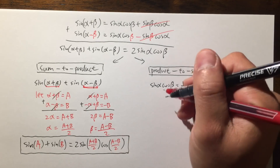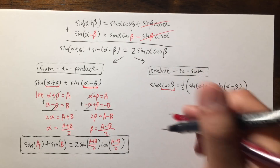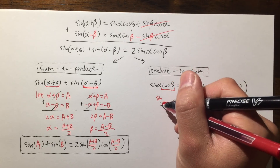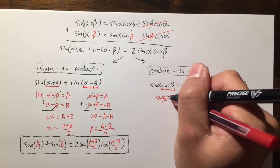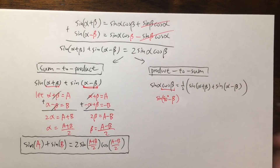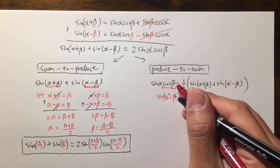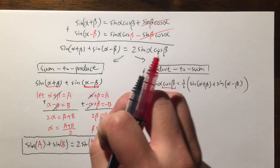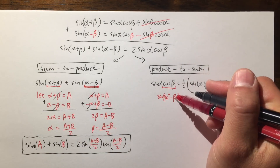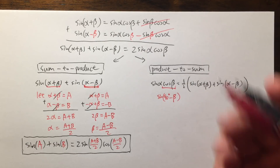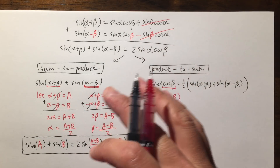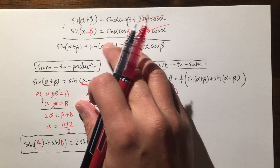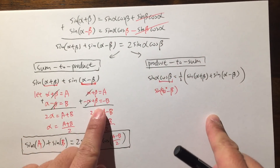I can also show you the co-function identity. I see cosine beta, which we don't want — I want to have this in terms of sine. Cosine beta is the same as sine of 90 degrees minus beta. Why? Because 'co' means complementary, meaning these two angles add up to 90 degrees, or pi over 2. The same applies to co-functions like cosecant or cotangent. For example, cosecant of 20 degrees is the same as secant of 70 degrees because the angles add up to 90 degrees.